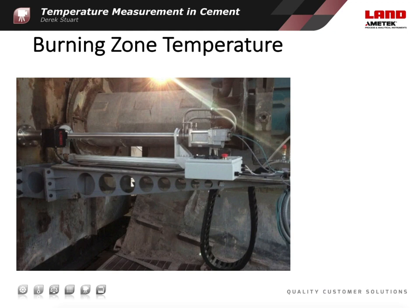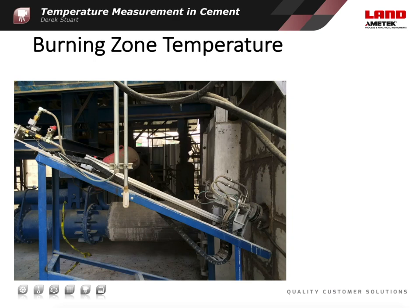Borescope optics are rather expensive, so we want to be sure they won't be damaged if the purge air or cooling water are lost temporarily. An automatic retraction system is therefore a valuable safety precaution. The purpose of this system is to withdraw the entire instrument from the process if it detects either a failure of the purge air or of the cooling water. Both electrical and pneumatic retraction systems are available. The electrically operated system shows the entire borescope in the withdrawn position. A pneumatic system can tolerate higher ambient temperatures and so offers better reliability in the most aggressive applications.